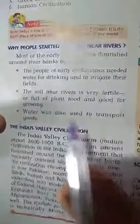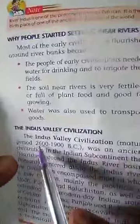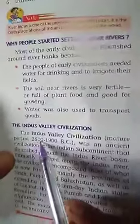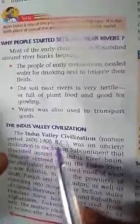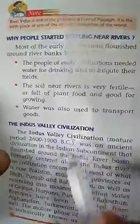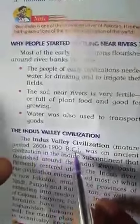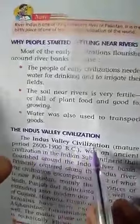Next, the first civilization we will study is the Indus Valley Civilization. The Indus Valley Civilization flourished around 2600 to 1900 BC. This was the period during which the Indus Valley Civilization flourished. This was an ancient civilization in the Indian subcontinent.